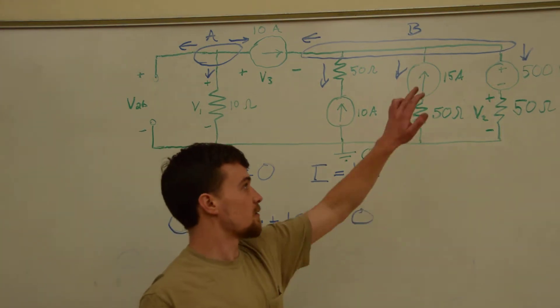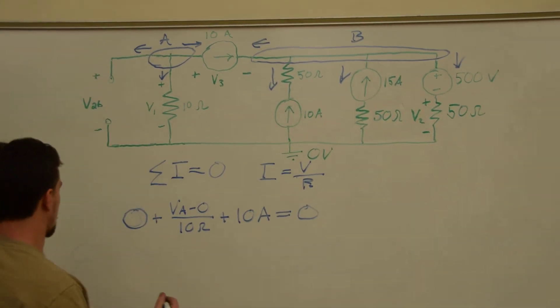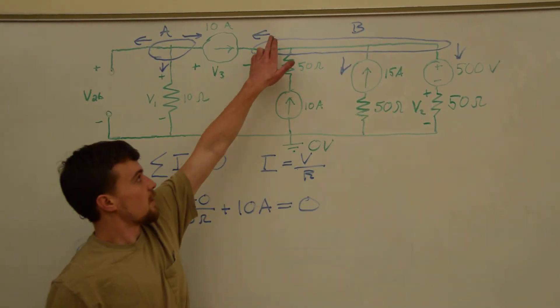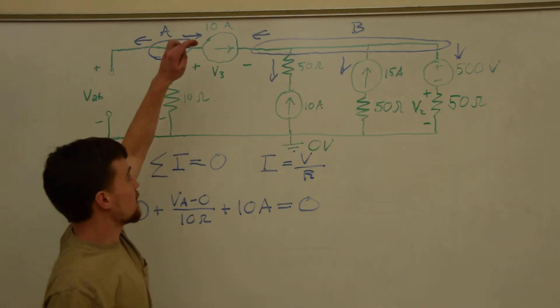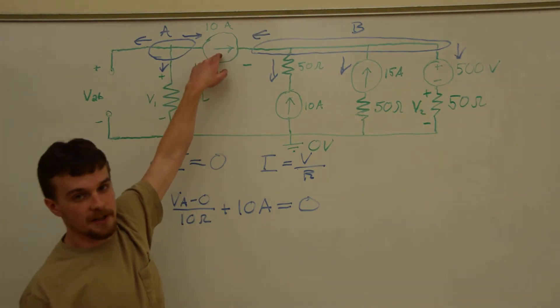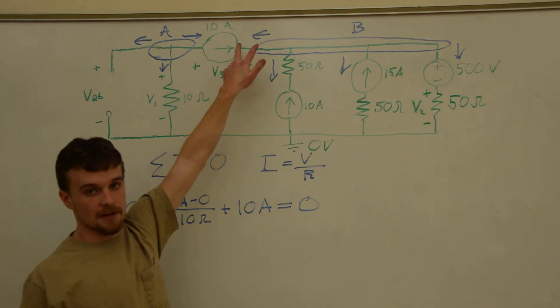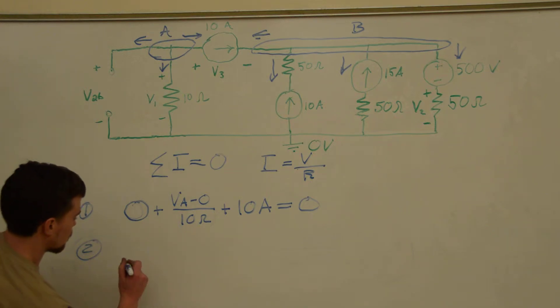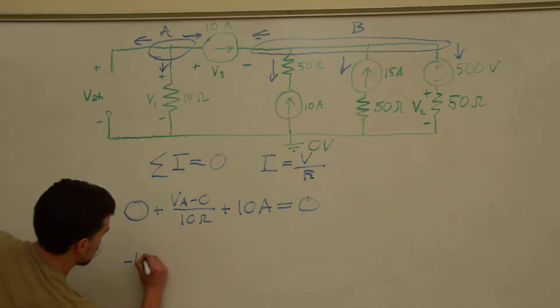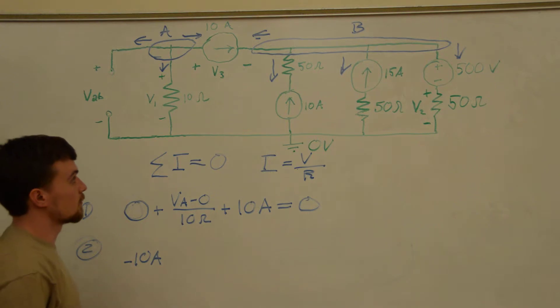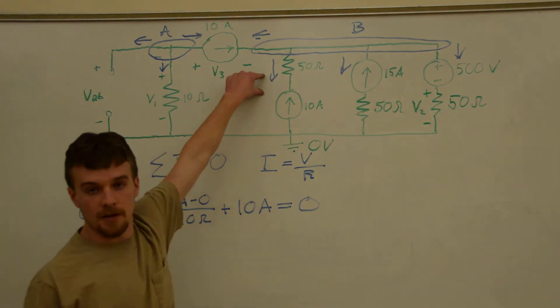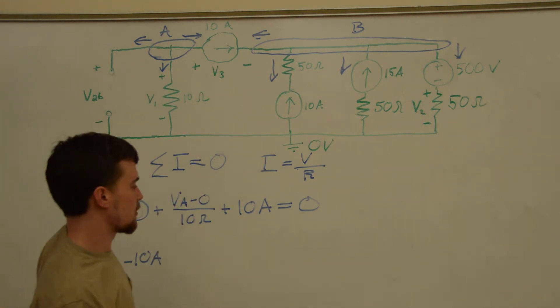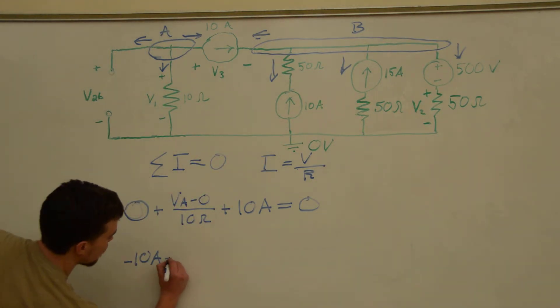Next, we'll get an equation using this node. This current is also defined by this source, but since they point in opposite directions, this current is actually negative 10 amps. Next, this current is also defined by its source, and they also flow in opposite directions. So, again, we have negative 10 amps.